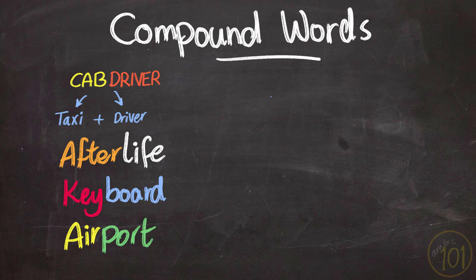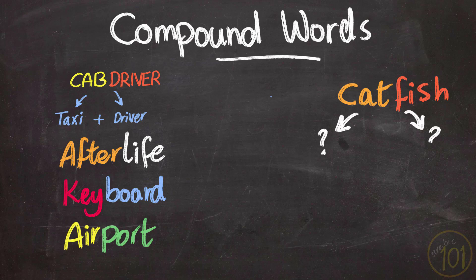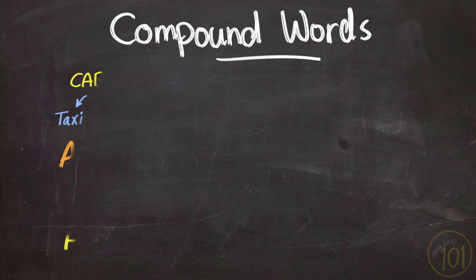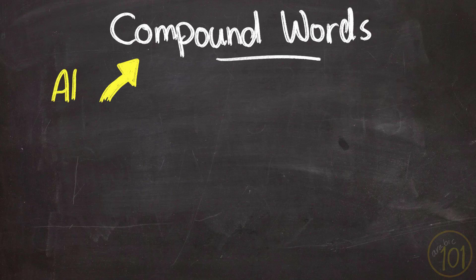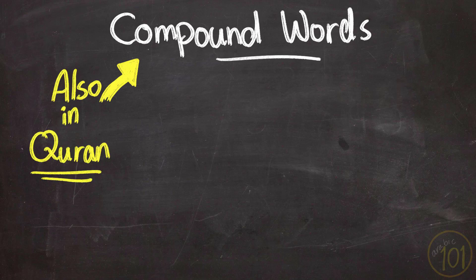But sometimes putting the meaning of both words together can be misleading and will not reveal the real meaning of the compound word, like catfish or hot dog. In Arabic, and more specifically the Holy Quran, this phenomenon is also present.